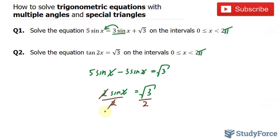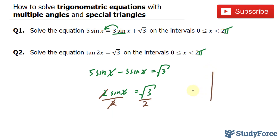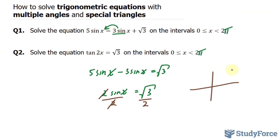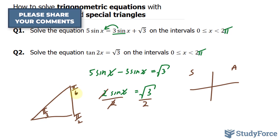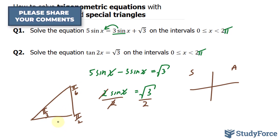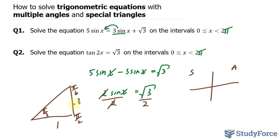There is a special triangle for the square root of 3 over 2. The CAST rule tells us that all trigonometric functions are positive in quadrant 1 and sine is positive in quadrant 2, so we're going to have two angles for this particular ratio. The special triangle has angles pi over 2 (90°), pi over 3 (60°), and pi over 6 (30°), with opposite sides 1, square root of 3, and hypotenuse 2.